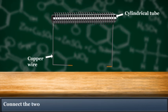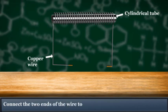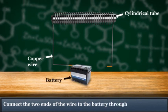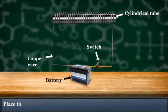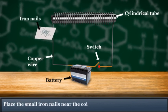Connect the two ends of wire to the battery through a switch. Place the small iron nails near the coil.